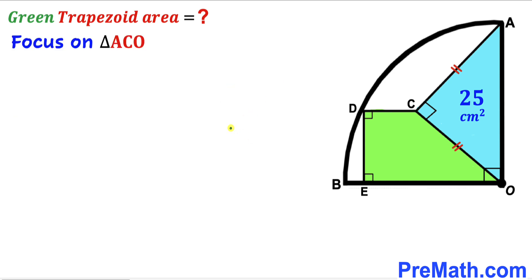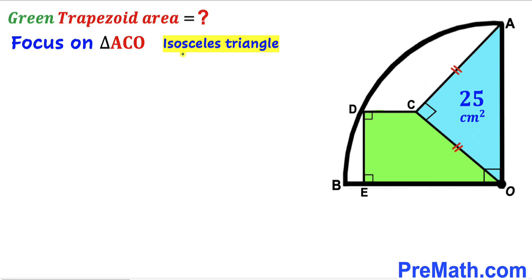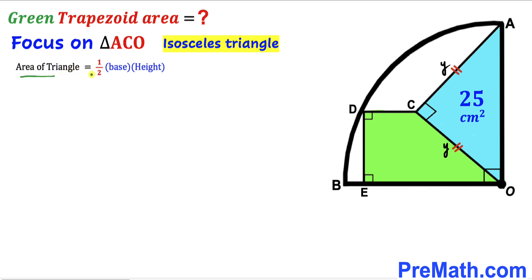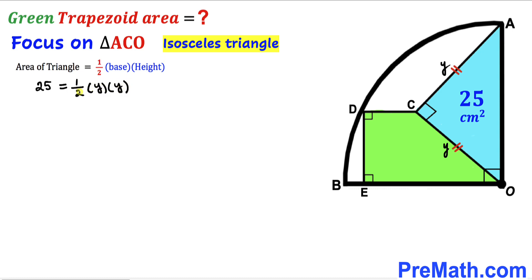Let's get started. Let's focus on the blue shaded triangle ACO. This is an isosceles triangle since both equal side lengths, which we label as lowercase y, serve as its base and height. Recalling the area of a triangle formula — area equals one half times base times height — we substitute: 25 equals one half times y times y.